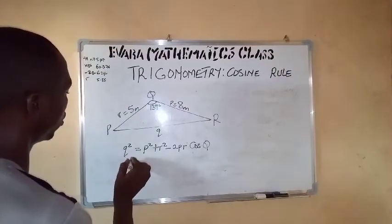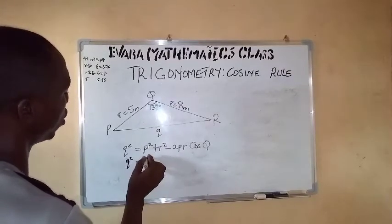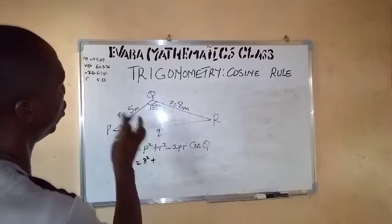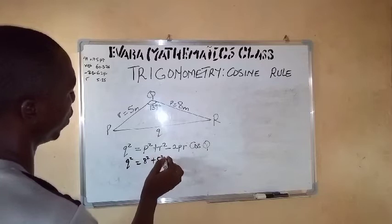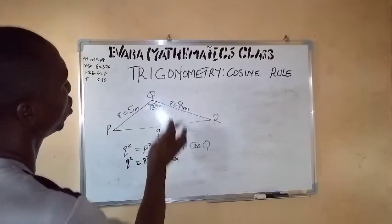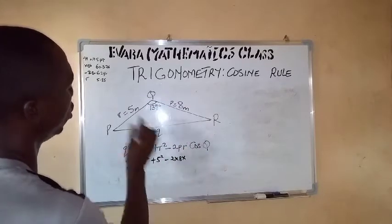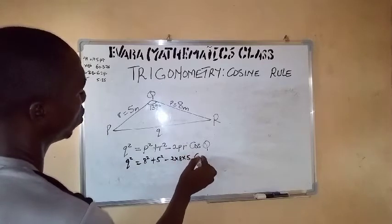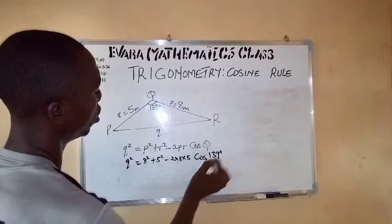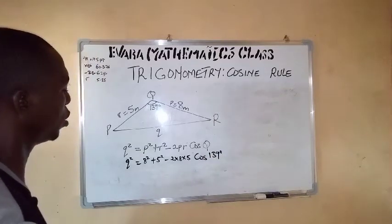Now q squared: what is p? Small letter p is 8, that is 8 squared. Small letter r is 5, 5 squared. And 2 times r times p: p is 8 and r is 5, cos Q. Q is 139 degrees.